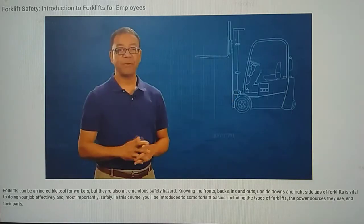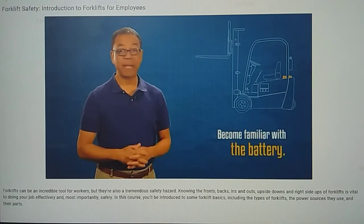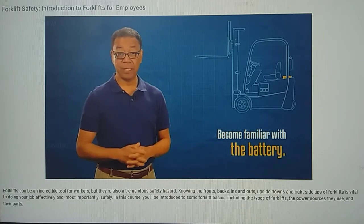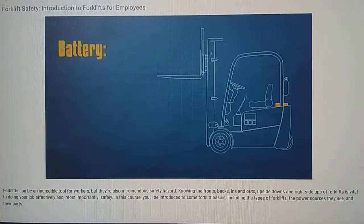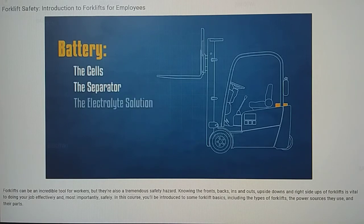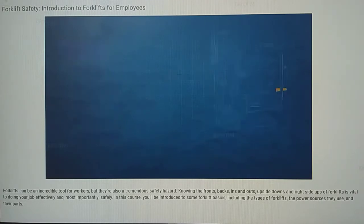If you're using an electric forklift, you'll also need to learn about the battery. Typical parts of an industrial battery include the cells, the separator, electrolyte solution, and the element — the positive and negative terminal at the top of each cell.